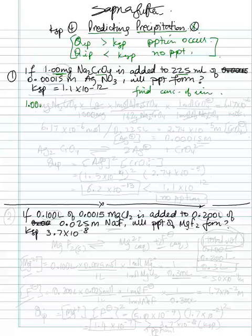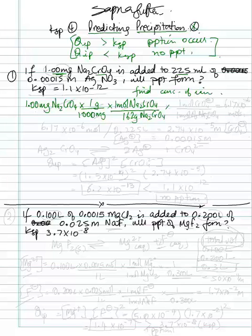So 1.00 milligrams of sodium chromate — convert that into grams: one gram per 1,000 milligrams. Then in one mole of sodium chromate you have 162 grams of sodium chromate (from the periodic table), and there is 1 mole of chromate ion in 1 mole of sodium chromate. That gives us 6.17 times 10 to the negative 6 moles. We haven't divided by volume yet.